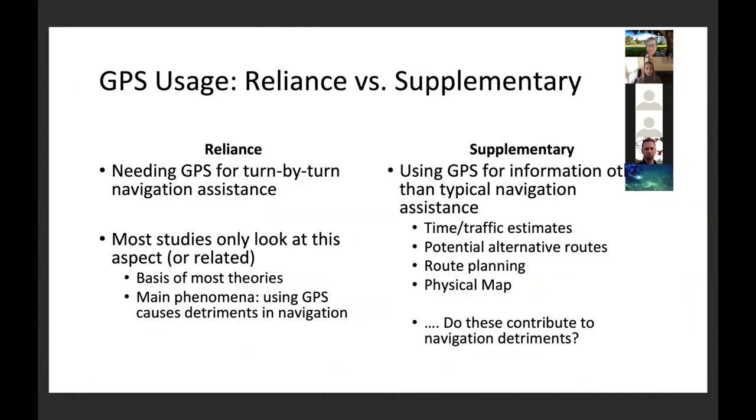GPS has numerous functionalities, which I'm going to broadly classify into groupings of Reliance versus Supplementary. By Reliance, I'm specifically talking about how we typically think of GPS, where turn-by-turn directions are provided every step of the way. Most research looks at this functionality, and there's compelling evidence to show that the more people rely on GPS for navigational purposes, the worse off they are when required to navigate without the device. To add to this, some of my lab's research indicates that younger generations may be particularly susceptible to Reliance detriments as they had access to GPS in their early driving years.